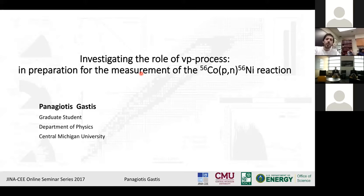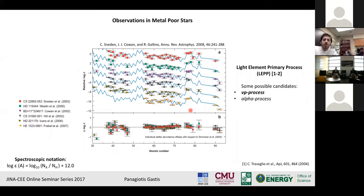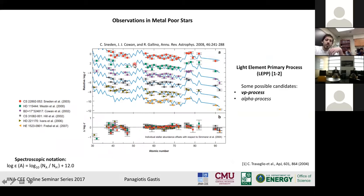I will talk about the research project that I'm currently working on. It's the measurement of the cobalt-56 PN reaction, which is relevant to the so-called neutrino P process that we will discuss today in more detail. Before we start with the νp-process, I want to first show these interesting results from some observations in metal-poor stars. These are very old stars, maybe second or third generation stars, that can give us very important information for nucleosynthesis, since only a few nucleosynthetic processes have contributed to their elemental composition.